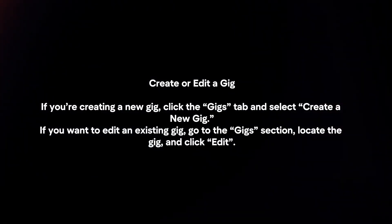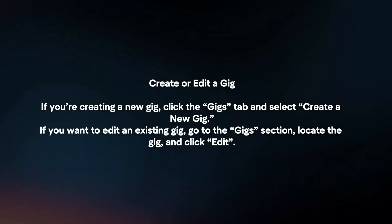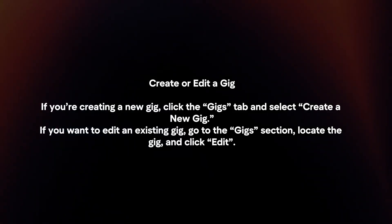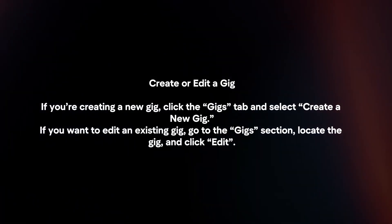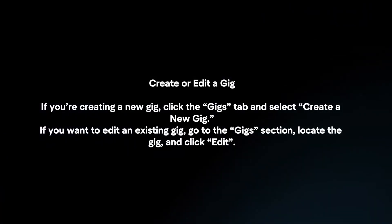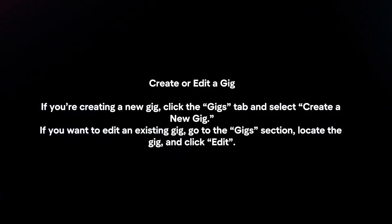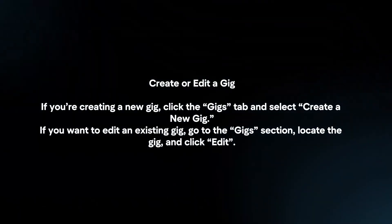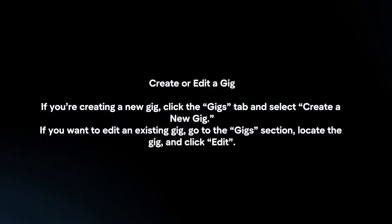Create or edit a gig. If you're creating a new gig, click the Gigs tab and select Create a new gig. If you want to edit an existing gig, go to the Gig section, locate the gig and click Edit.